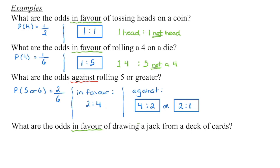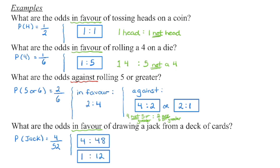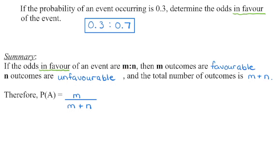Our last example goes back to odds in favor of drawing a jack from a deck of cards. I'm going to begin by finding the probability of drawing a jack — there are four jacks in a standard deck of 52 cards. Moving into odds in favor: four jacks compared to 48 cards that are not a jack. If you reduce this, both numbers are divisible by 4: 4 divided by 4 gives 1, and 48 divided by 4 gives 12 — so odds in favor is 1 to 12. The first number represents favorable outcomes, the second represents unfavorable, and adding the two together gives the total number of outcomes, which is the denominator when calculating probability.